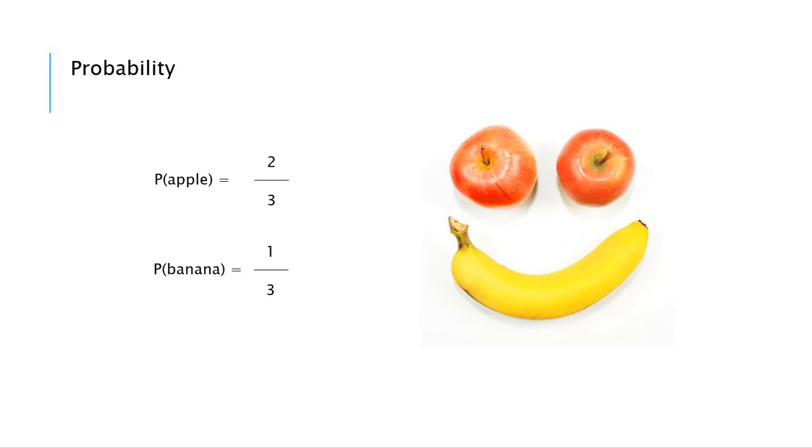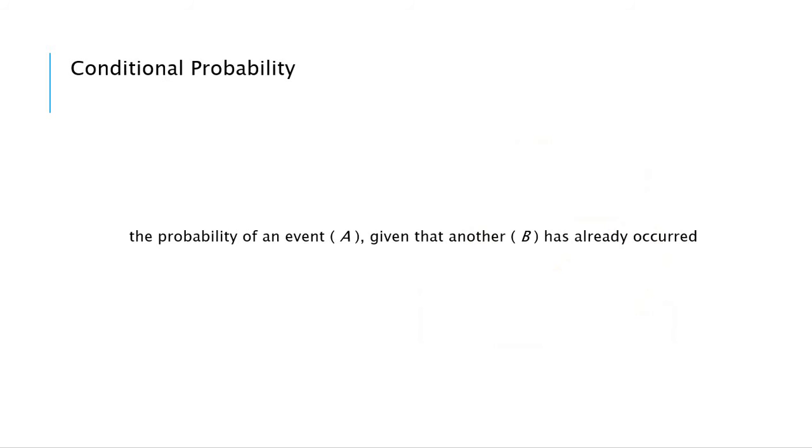Here is a simple example. When we have two apples and one banana, we can say P of apple is 2 in 3 because we have two apples out of three fruits. And P of banana is 1 in 3 because we have one banana out of three fruits. So let's go to the next step.